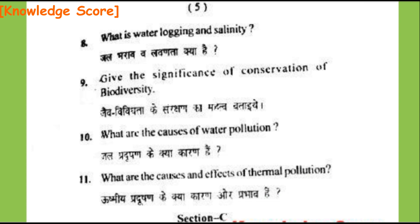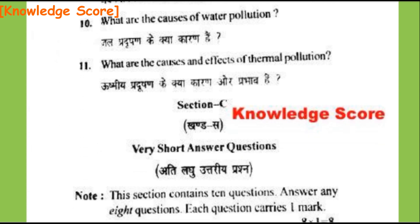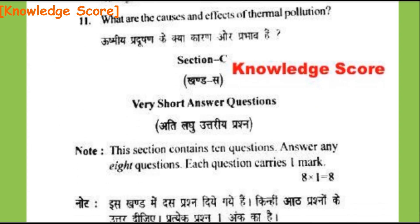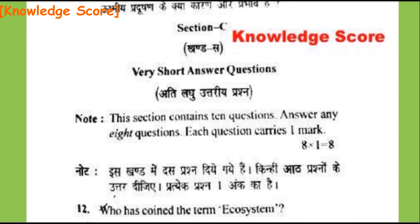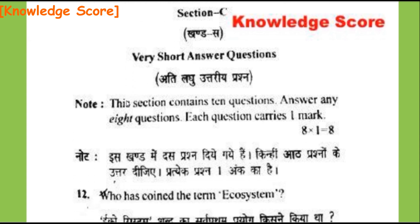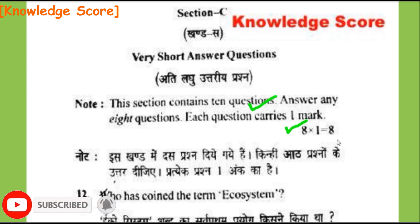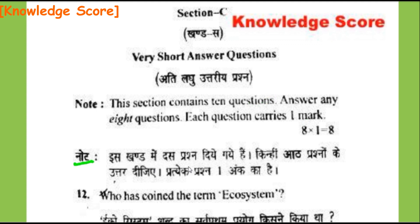This completes Section B of this paper. Now we will discuss Section C — very short answer questions (Ati Laghu Uttariya Prashna). This section contains 10 questions; answer any 8. Each question carries 1 mark — 8 into 1 equals 8. Section C carries 8 marks.